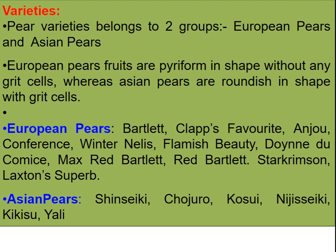Pear varieties belong to two groups: European pear and Asian pear. European pear fruits are pyriform in shape without any grit cells, whereas Asian pears are roundish in shape with grit cells. European pears include varieties like Bartlett, Anjou, Conference, Winter Nelis, Flemish Beauty, and many others. Asian pears have varieties like Shinseiki and many others.